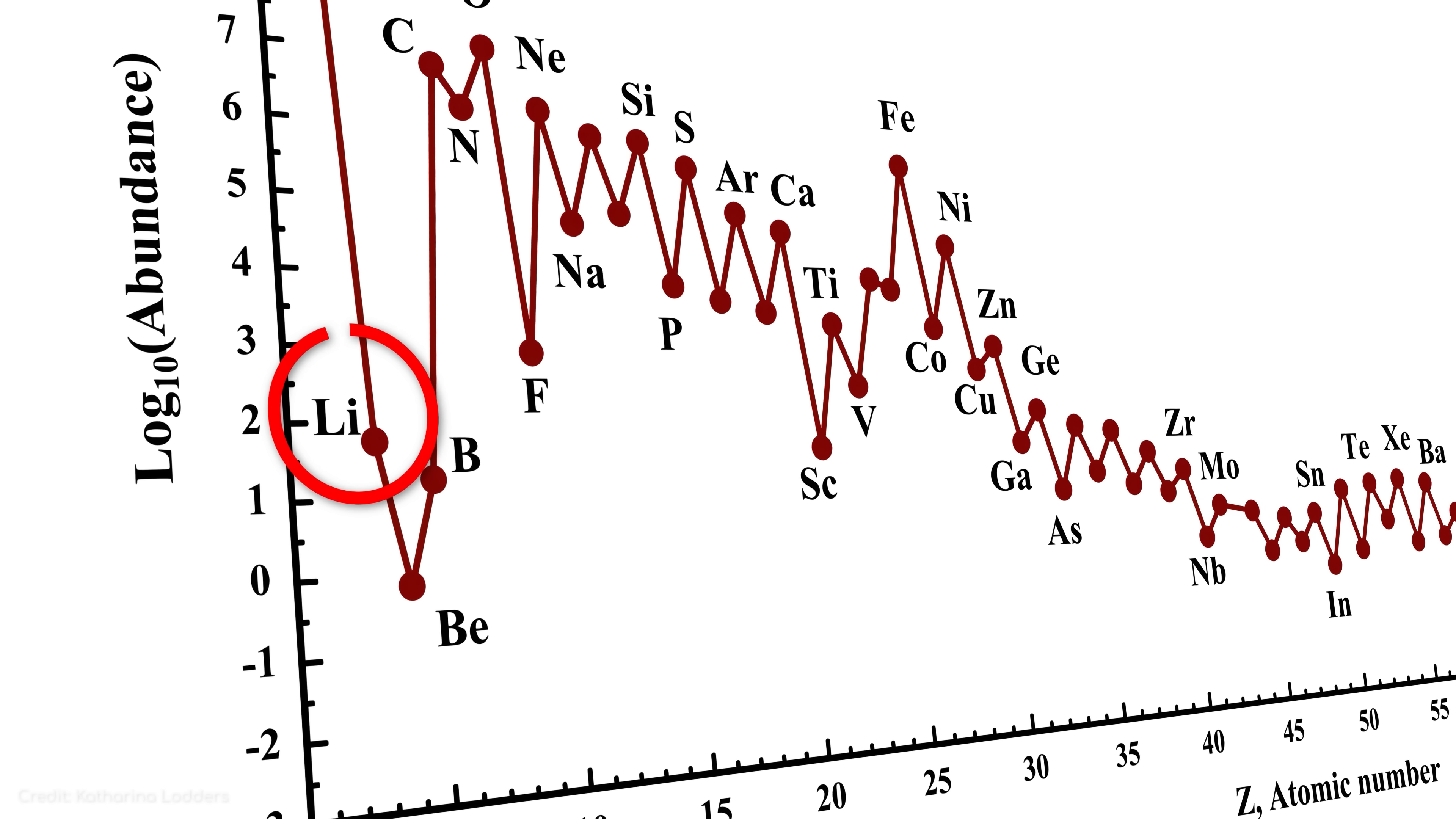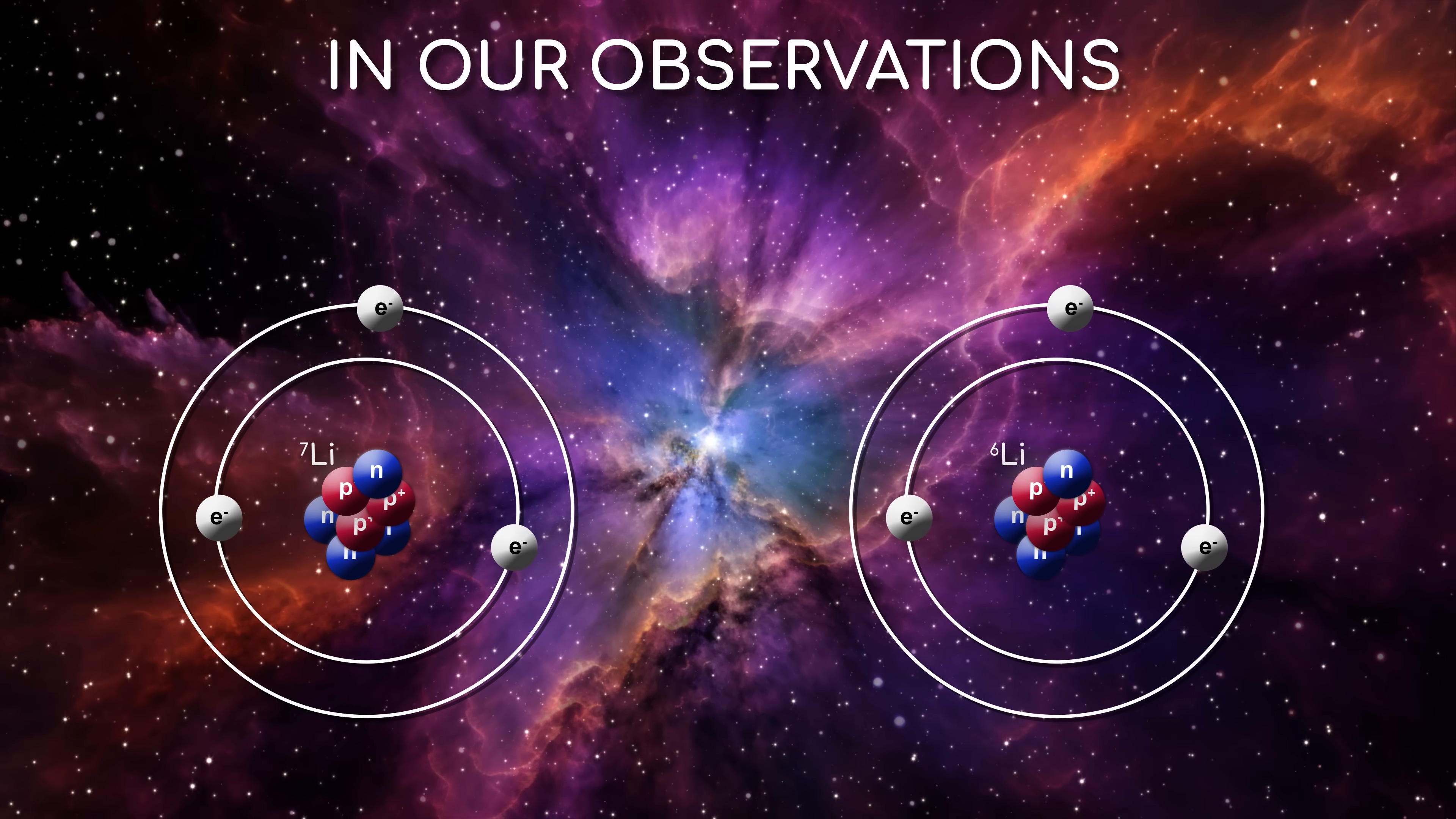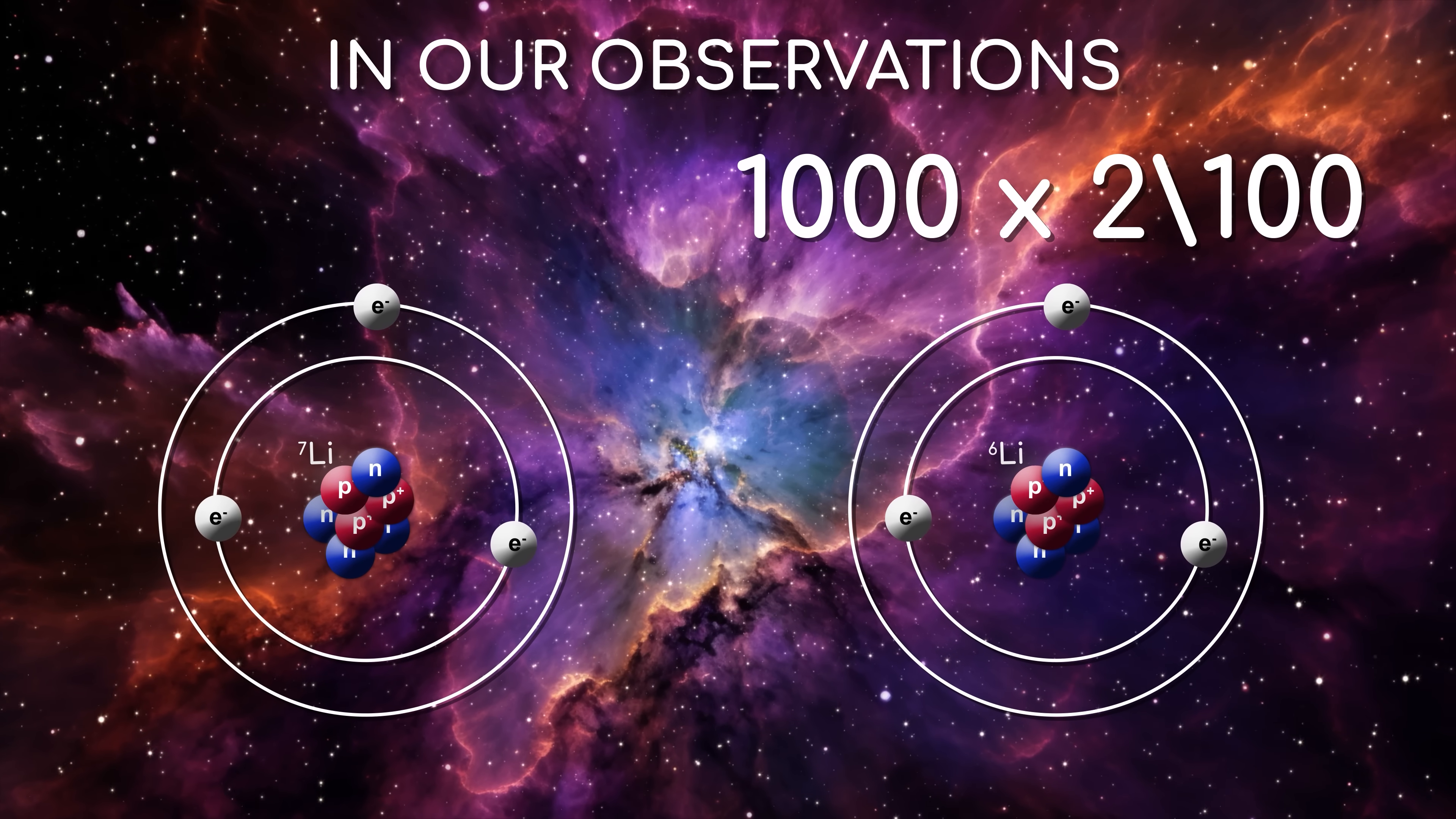While the amount of lithium in the universe is too low, the ratio of lithium-6 to lithium-7 is much too high. Lithium-6 is a staggering 1,000 times more prevalent in the early universe than it should be.